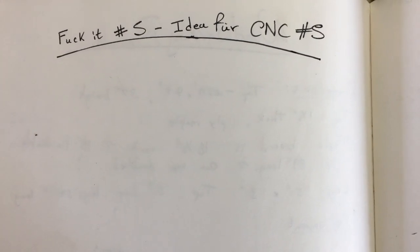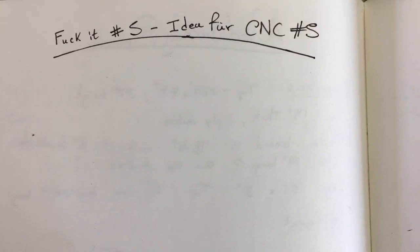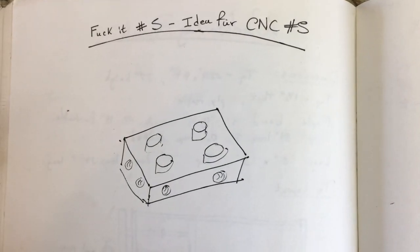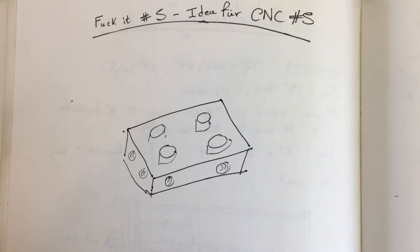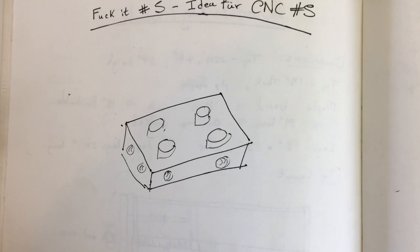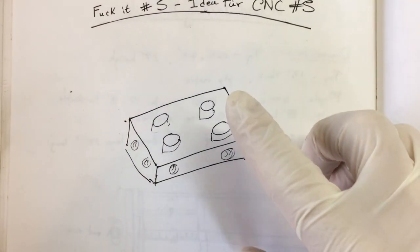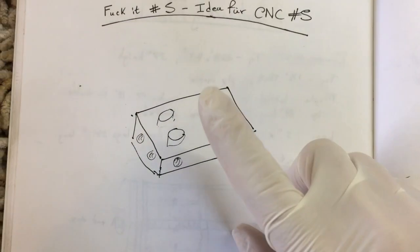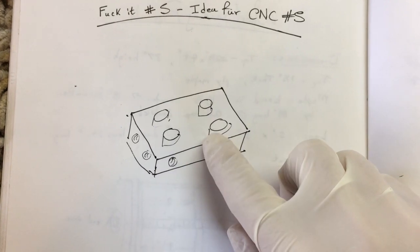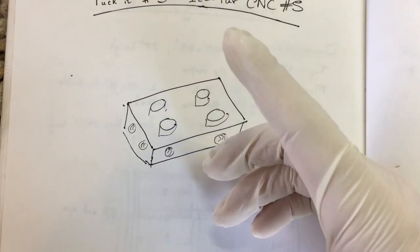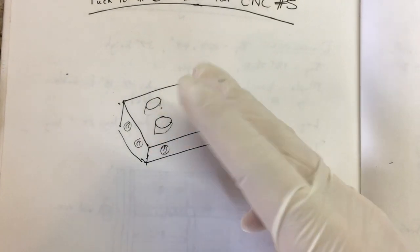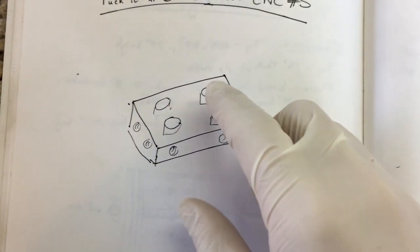Fuck it number five - idea for CNC number five. Fuck it number five is all about the viewers and keeping the ideas flowing. It's a giveaway item, an item easy to manufacture, because obviously this whole five-axis CNC...